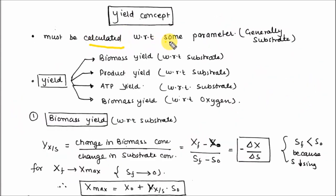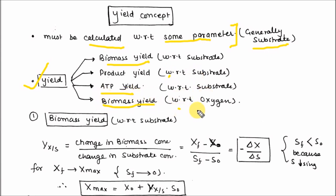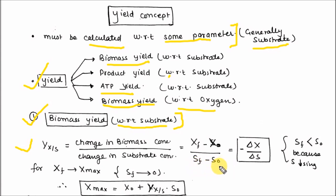Yield must be calculated with respect to some parameter. Generally, substrate is taken as the reference parameter. Yield can be defined as biomass yield with respect to substrate, product yield with respect to substrate, ATP yield with respect to substrate, or biomass yield with respect to oxygen. Biomass yield Y_x/s is the change in biomass concentration divided by change in substrate concentration, that is (Xf - X₀)/(Sf - S₀). Since substrate decreases continuously during growth, Sf is less than S₀, giving minus ΔX/ΔS.